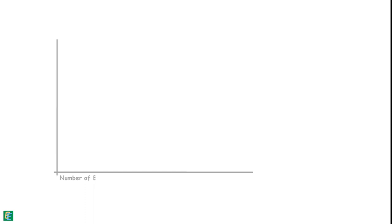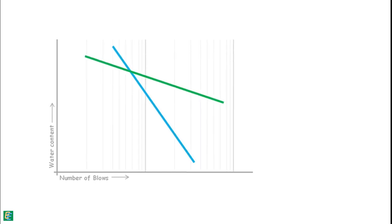We can see that by considering flow curves of these two different soils. At water content W1, Soil1 flows at N1 Soil1 number of blows and Soil2 flows at N1 Soil2 number of blows. Now if we slightly reduce the water content of the soils, then they will gain some shear strength.